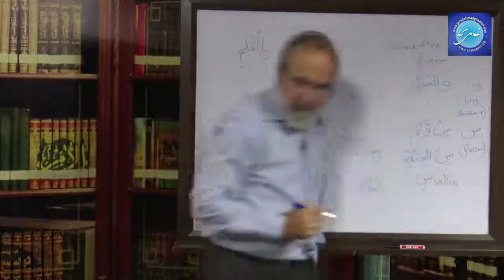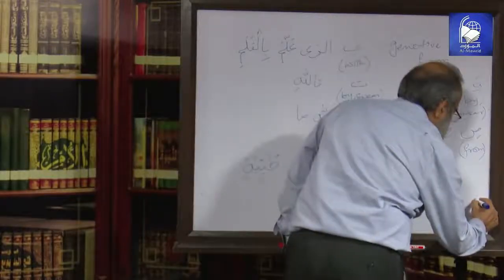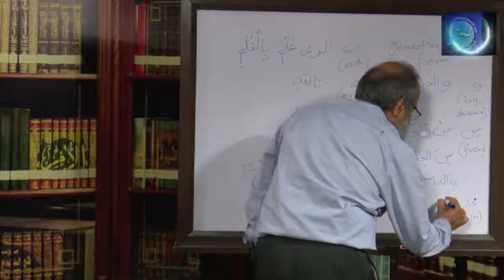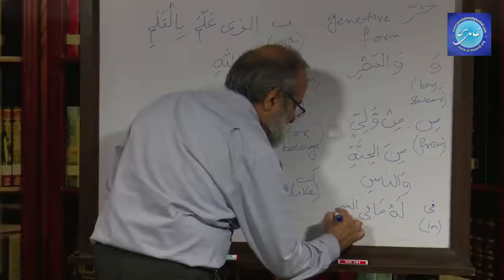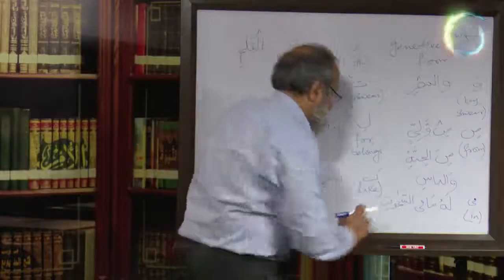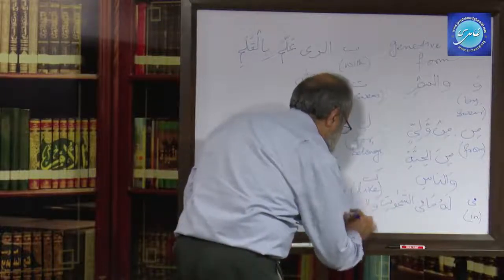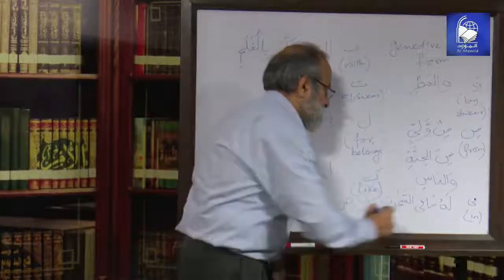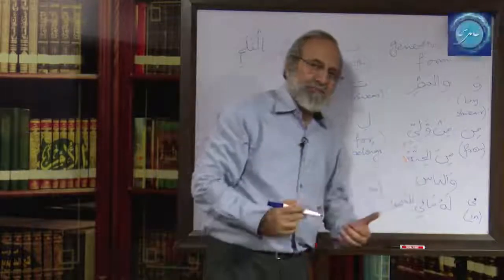From Min we move on to Fi, which means 'in'. For example: 'Lahu ma fissamawati wal ard' — 'For Him is whatever is in the heavens and the earth.' Fi gives Jar to al-samawat. Again, the Waw here is the conjunction 'and,' so Fi is giving the genitive case to the nouns that follow it.